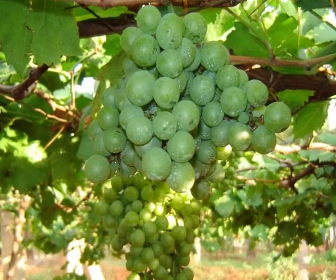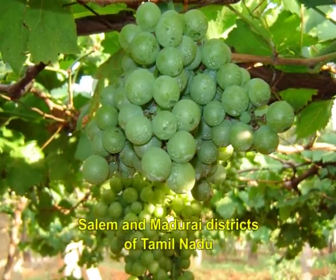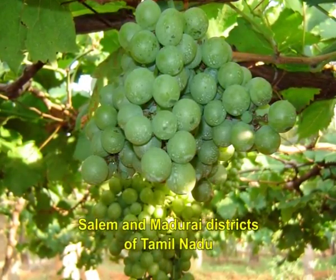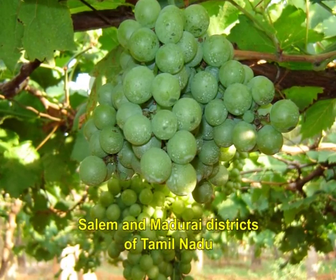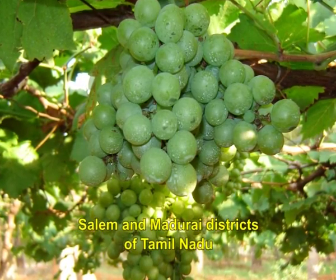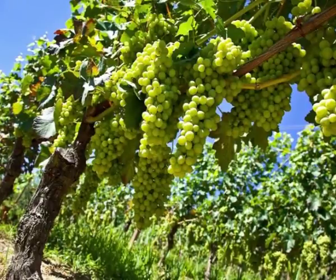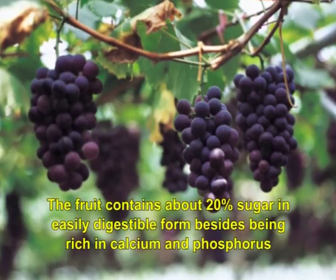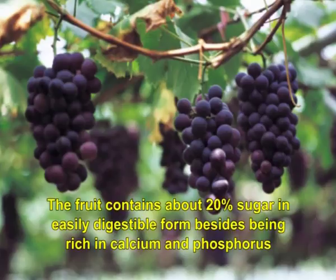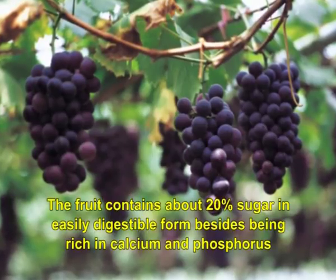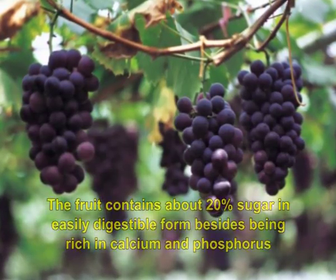Grape was introduced into the south, especially in Salem and Madurai districts of Tamil Nadu, by Christian missionaries around 1832 AD. Later it spread to different parts of the country. The fruit contains about 20% sugar in easily digestible form, and is rich in calcium and phosphorus.